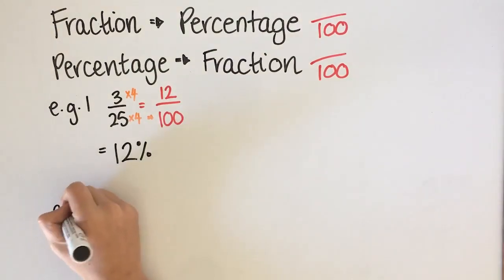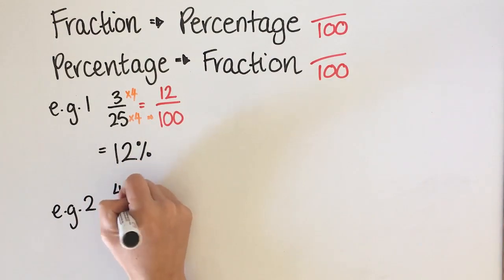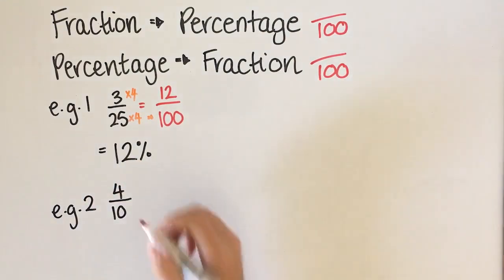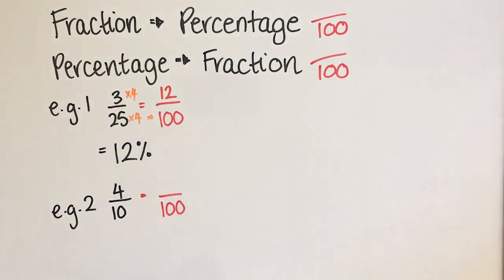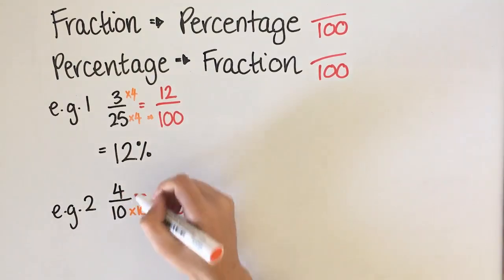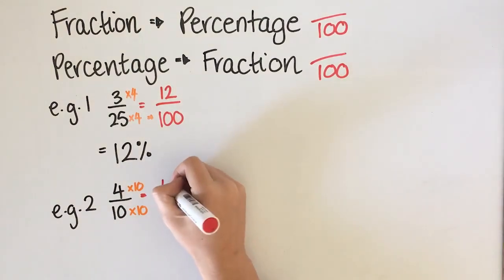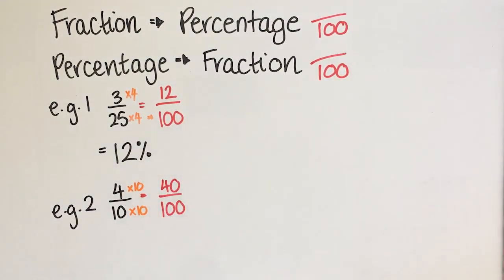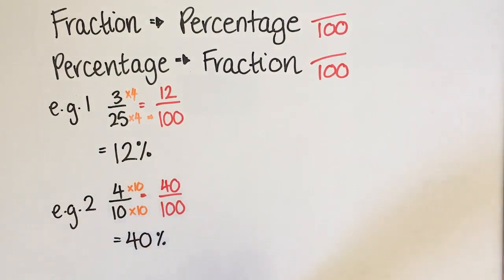For the second example: 4 over 10. I want to put this over 100 to find the percentage. 10 times 10 gives 100, so whatever I've done to the bottom I need to do to the top — times by 10. 4 times 10 is 40, so 40 out of 100 is the same as 40%.